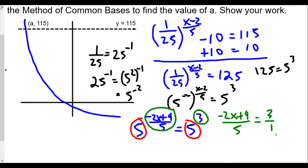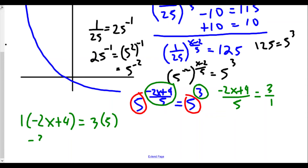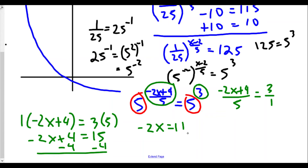We worked hard to find the common base and modify the exponents to equivalent values. Now we set the exponents equal and solve. Cross multiplying gives us: one times (negative 2x plus 4) equals 3 times 5, so negative 2x plus 4 equals 15. Subtracting 4 from both sides gives negative 2x equals 11. Dividing both sides by negative 2, we get x equals negative 5.5.